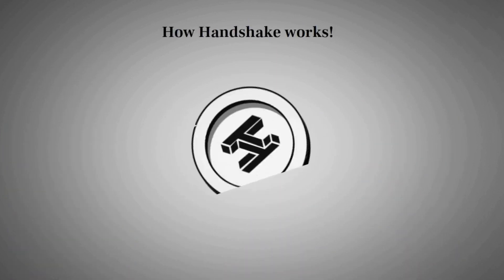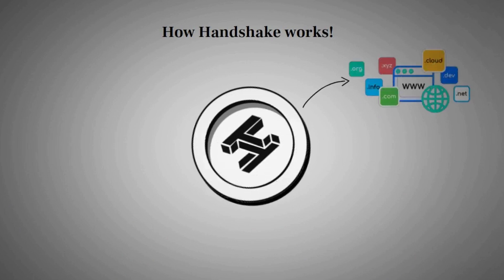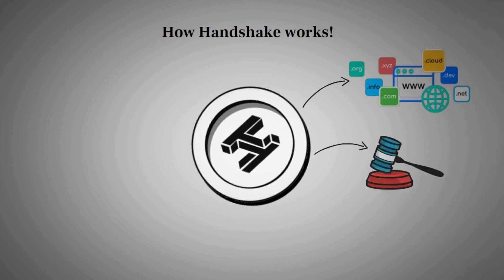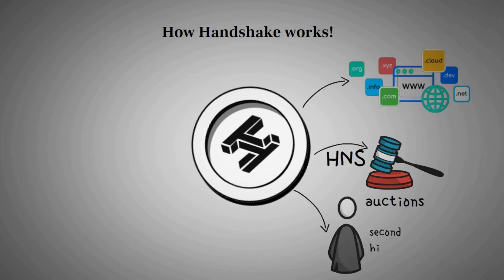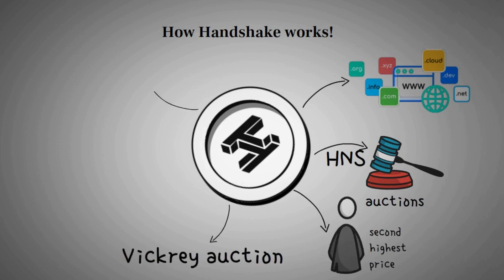Let's look further into how Handshake works. Simply put, Handshake is a system for distributing website addresses through auctions. With Handshake, auctions for top-level domain names are held every two weeks. Users must bid using Handshake's cryptocurrency, HNS, to take part in the auction. The winning bidder pays the second highest price, using a format known as a Vickrey auction. These auctions are all handled automatically by the Handshake software.